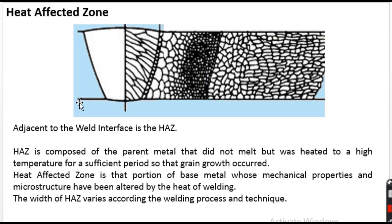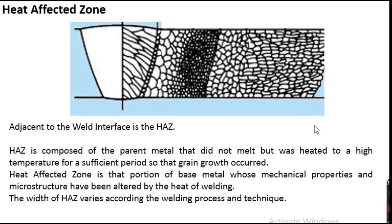Next we have the heat affected zone, which is adjacent to the weld interface. The heat affected zone is the portion of the parent metal that did not melt but underwent a thermal cycle — it was exposed to varying ranges of temperature, causing significant microstructural changes. It is not completely molten, but the grain structure is quite different from the base material. The width of the HAZ varies according to the welding process: in normal shielded metal arc welding the HAZ is wider, whereas in electron beam welding the heat is highly concentrated so the HAZ is much smaller.